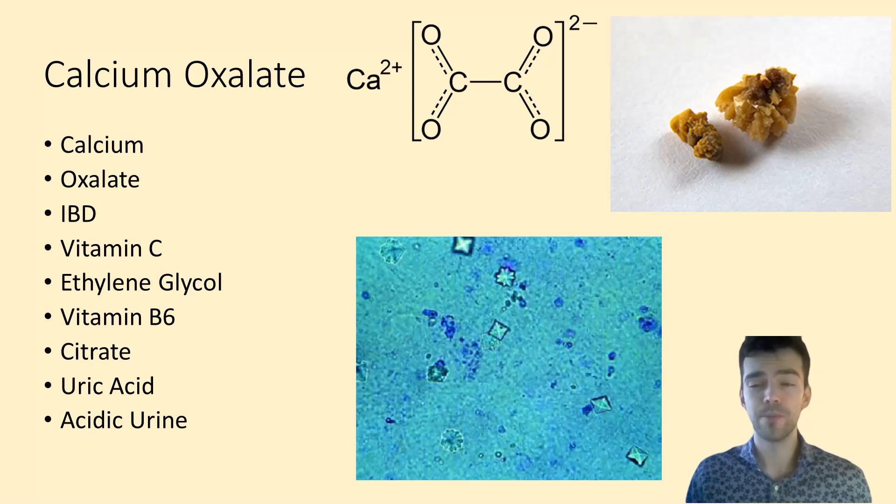Here on the top right we have a big, spiky calcium oxalate stone. As you can see, this probably hurts a lot and causes a lot of damage on its way out from the kidney.